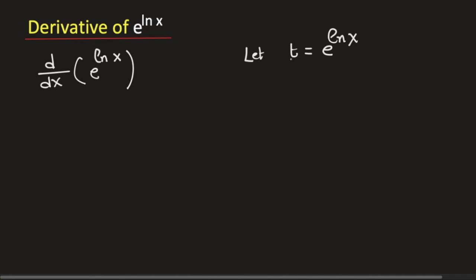Now taking logarithm of both sides with base e, we will get logarithm of t with base e is equal to logarithm of e power ln x with base e.